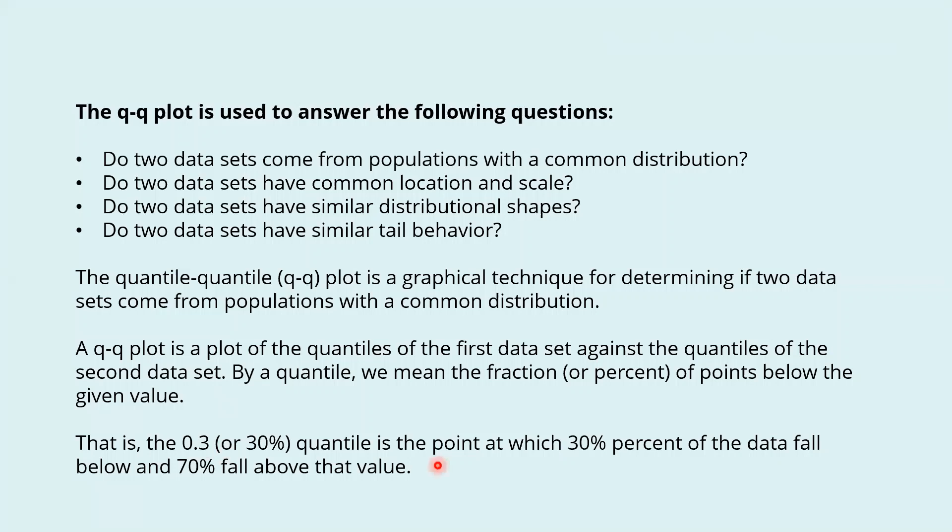That is, the 0.3 quantile is the point at which 30% of the data fall below and 70% fall above the value.